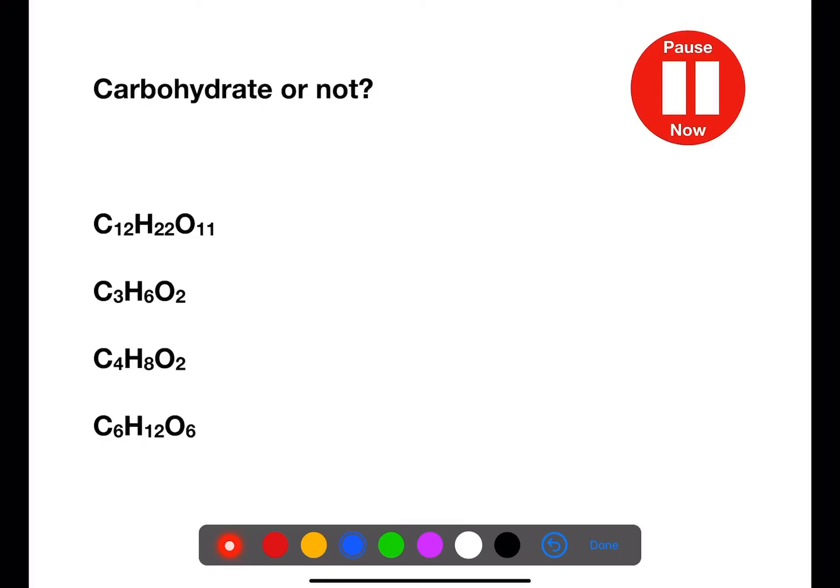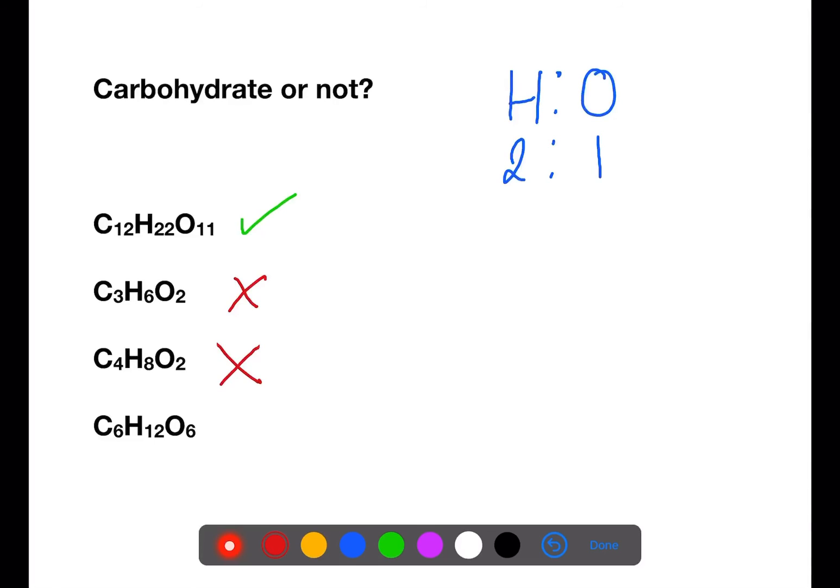Pause the video now and decide if these chemicals are carbohydrates or not. So how do we know if something is a carbohydrate? We're looking for that hydrogen to oxygen ratio of 2 to 1. In the first example, we have C12H22O11. So that would be a carbohydrate. In the second example, we have C3H6O2. This does not have the 2 to 1 ratio, so it's not a carbohydrate. The third example, we have C4H8O2. Again, we don't have the 2 to 1 ratio, so it's not a carbohydrate. In our last example, we have C6H12O6. We have a 2 to 1 ratio between hydrogen and oxygen, so that is a carbohydrate.